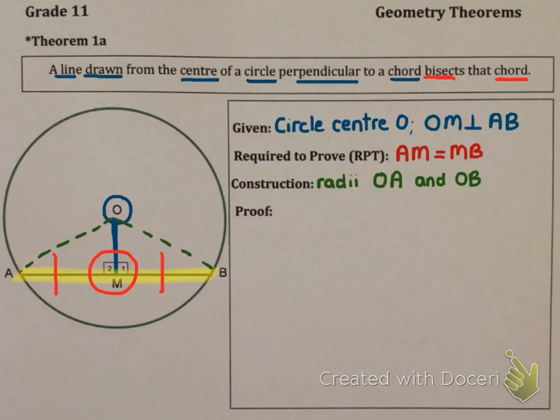Now we're ready to prove this. As soon as we draw this construction, hopefully it jogs your memory of something we did in grade 10 and grade 9—congruency of triangles. Because as soon as we draw in these radii we have formed two triangles. If we're ever trying to prove that one part of a triangle is equal to its partner, congruency is the way to do it. So we have to start with in triangle OAM and triangle OBM.